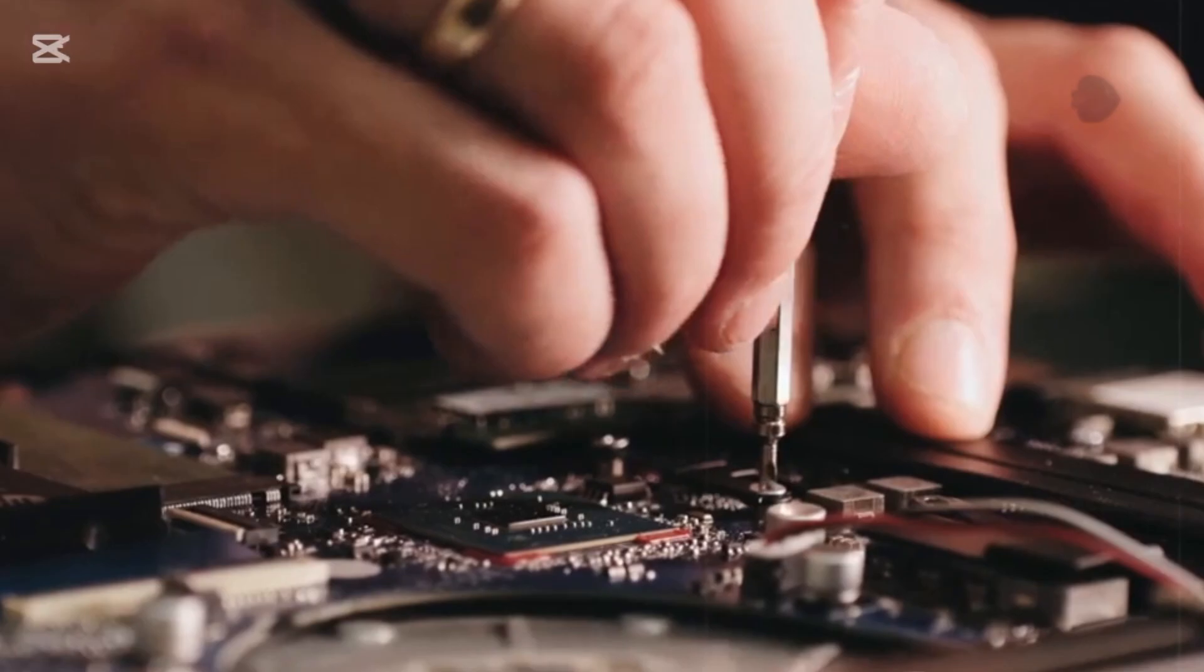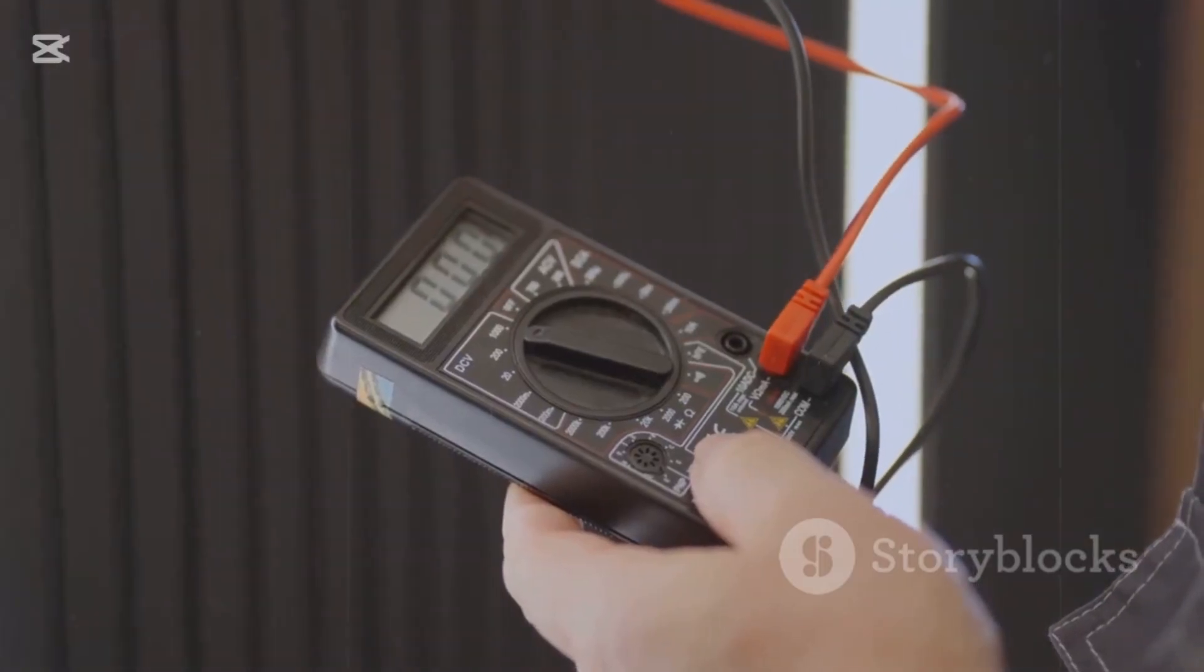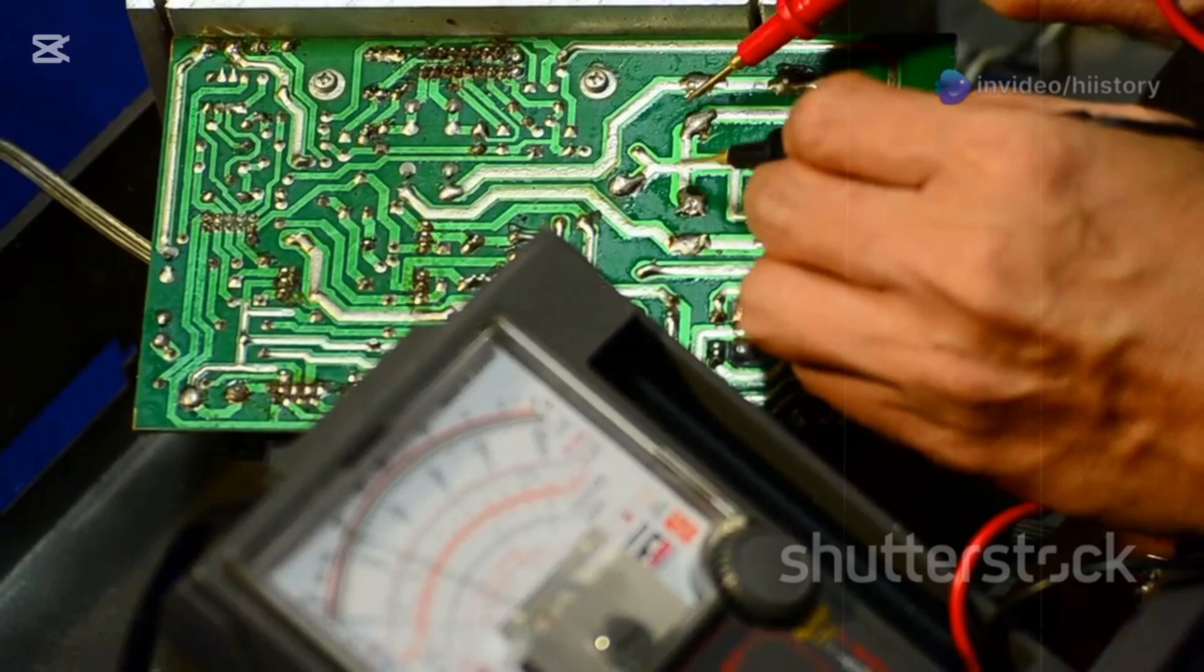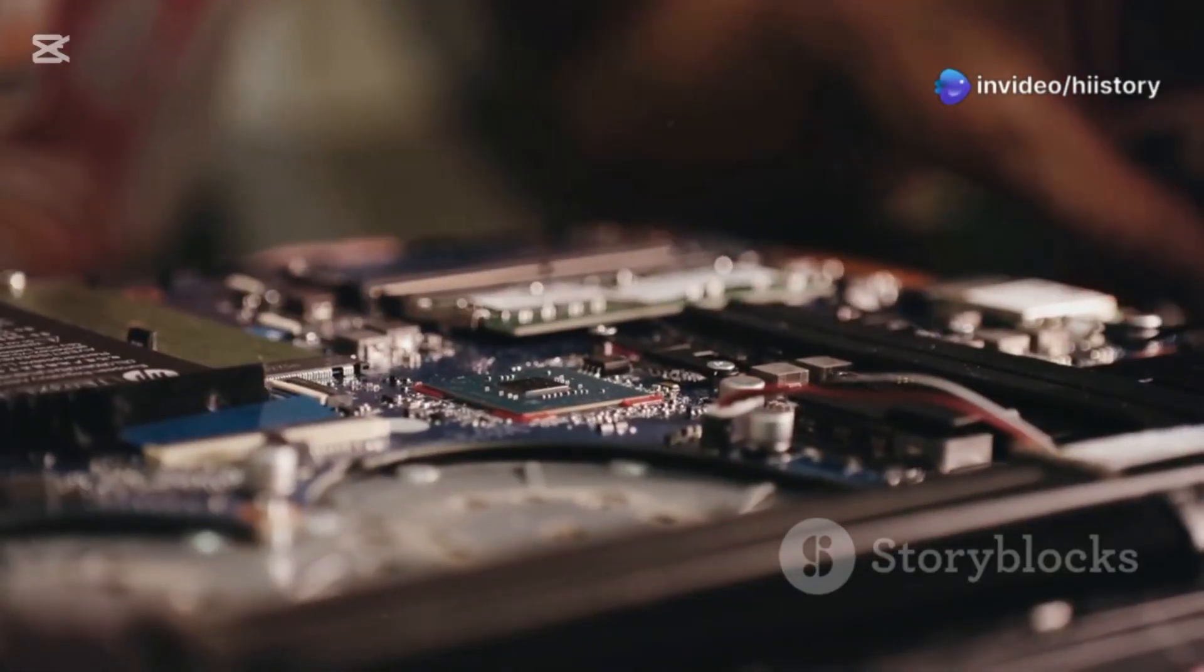Want to check if your MOSFET is functioning? Use a multimeter. A healthy MOSFET should not show a short circuit between the drain and source unless activated. This simple test can save hours of troubleshooting.